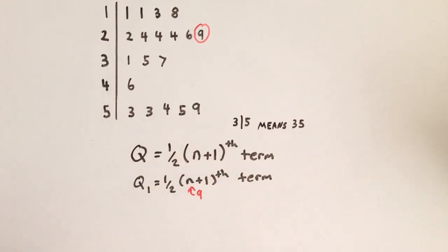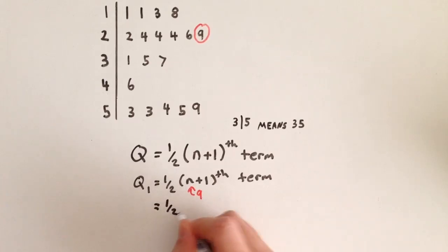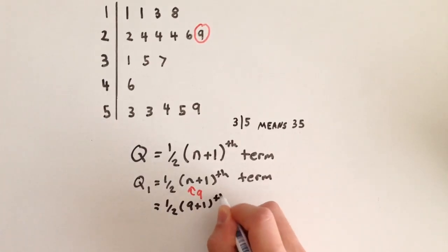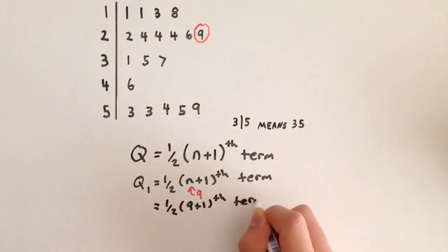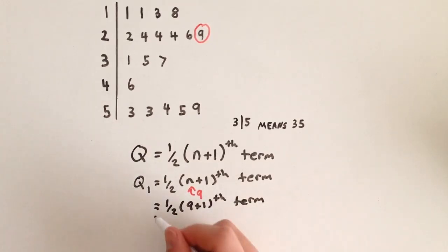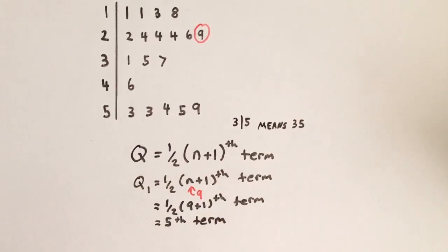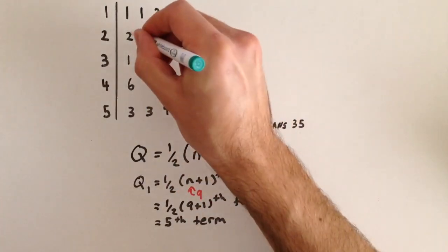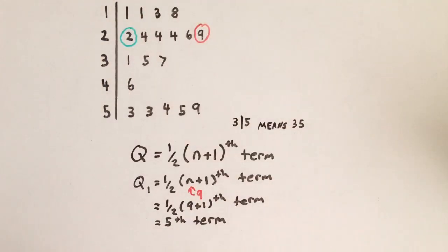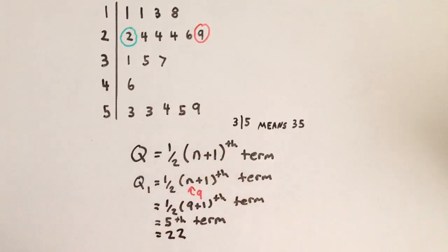Substituting n equals 9: one half of (9 plus 1)th term. 9 plus 1 is 10, times one half is 5. So Q1 is at our 5th term. Counting in ascending order: 1, 2, 3, 4, 5. Here is our Q1. Reading off the stem and leaf plot, that equals 22. Our Q1 for this example is 22.